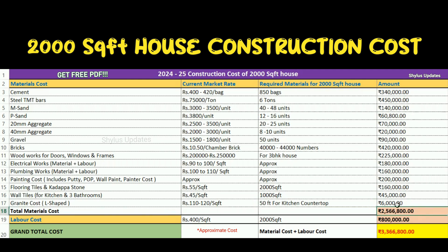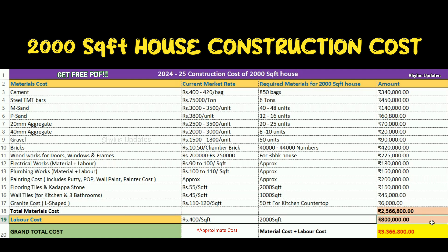When we add all these costs, the total material cost comes to ₹25,66,800. Labor cost is ₹400 per square feet. For 2,000 square feet, the total labor cost is ₹8,00,000.